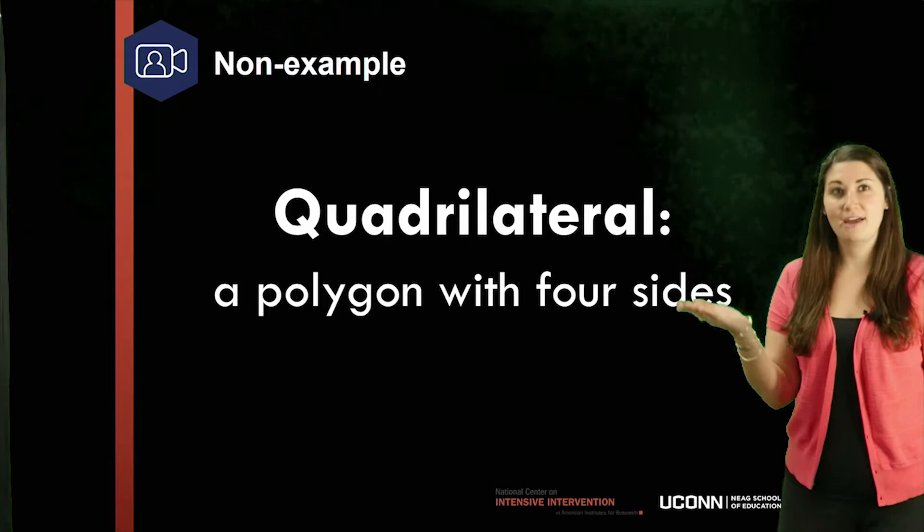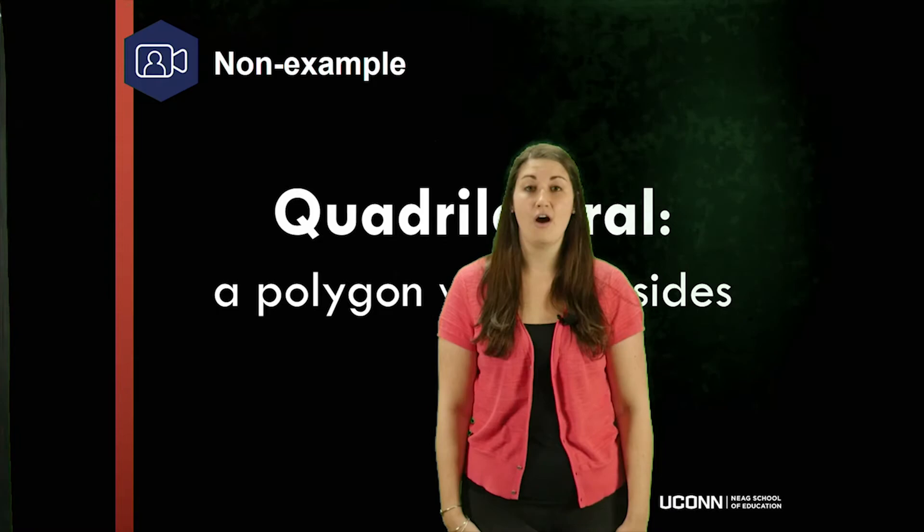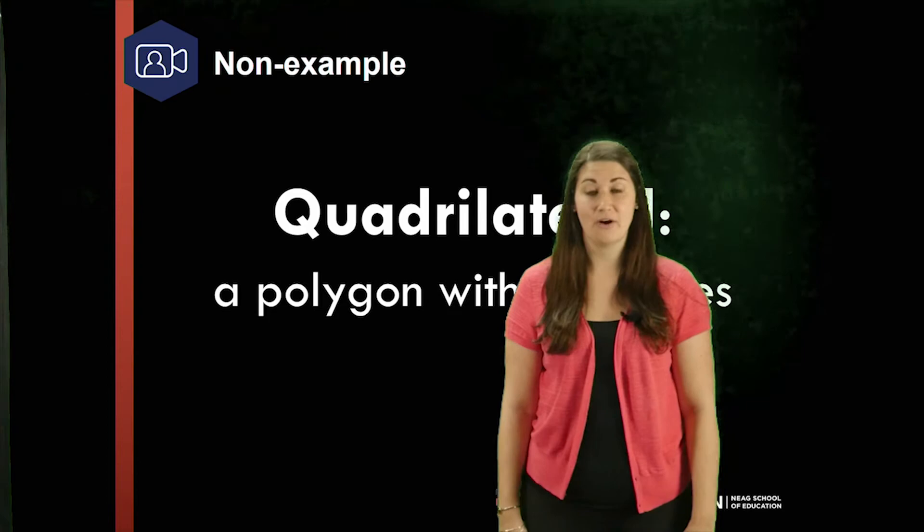In Ms. Pollack's third example—a non-example: 'Today we'll be learning about quadrilaterals. Look at the board—a quadrilateral is a polygon with four sides. I've given you each a worksheet. On the worksheet, go through and circle the polygons that are quadrilaterals. Once you're done, turn the page over and draw a shape that is an example of a quadrilateral. I'll collect these at the end of class.'